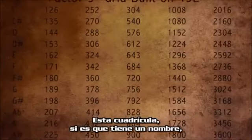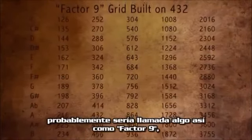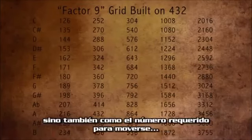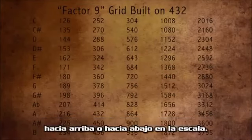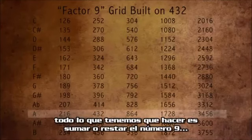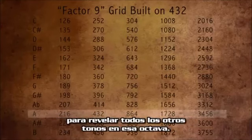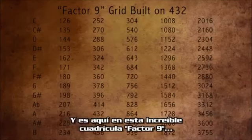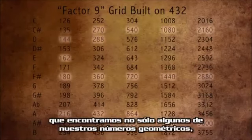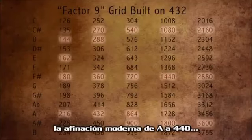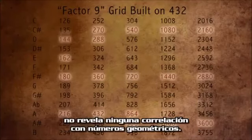This grid, if it had a name, would probably be called something like factor 9, because the number 9 is found not only in the sum of every note on the grid, but also as the number required to move up or down the scale. For instance, if we started at note A at 216 cycles, all we would have to do is add or subtract the number 9 to reveal all the other tones in that octave. And it is here, on this incredible factor 9 grid, that we find not just some of our geometric numbers, but all of them. Conversely, modern A440 tuning reveals not one correlation to geometric numbers.